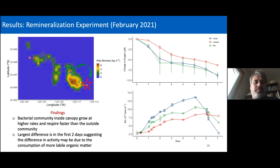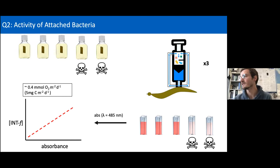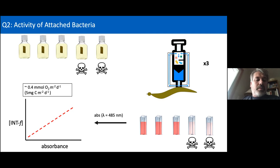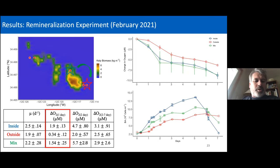Another question about the INT method: is it expected that the kelp itself doesn't take up the formazan? Chance responds: it is sensitive to photoautotrophs, but because we're collecting the cells by blasting them off with the super sucker, the idea is we're hopefully not collecting the kelp tissue cells in that resuspension. A question about the transect map: the transect placement isn't super obvious based on the kelp image — is there a mismatch? Chance responds: they hoped for a clean transect through a complete canopy, but it was pretty patchy that day.